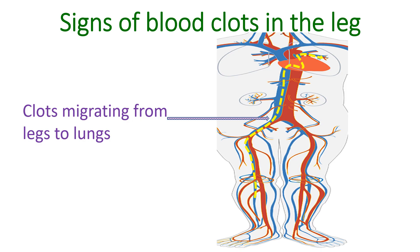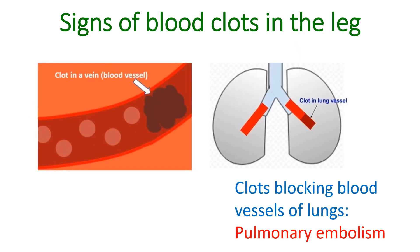Clots in the veins can migrate to the lungs and produce pulmonary embolism, a potentially fatal condition if it is massive. Clots travel up from the blood vessels in the legs through the blood vessels of the abdomen into the heart and then the lungs. Clots blocking the blood vessels of the lungs produce breathlessness, fall in oxygen saturation, fall in blood pressure, and sometimes chest pain. Hemoptysis can also occur in pulmonary embolism, especially when there is associated pulmonary infarction. This needs emergency treatment.